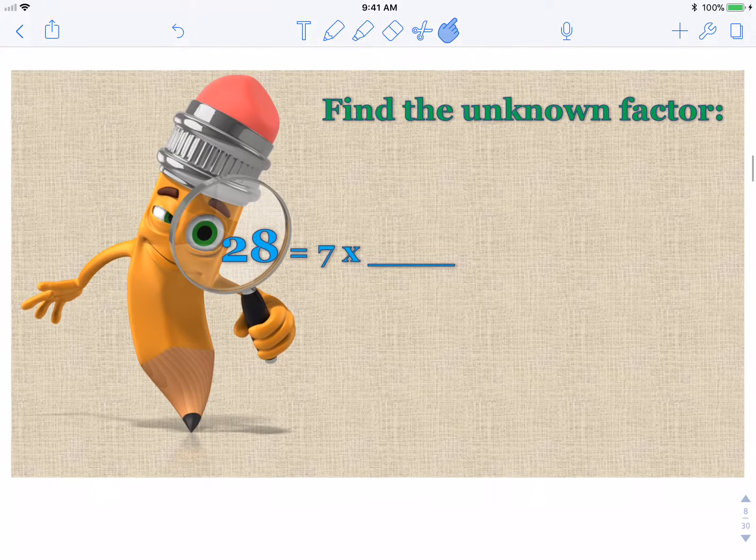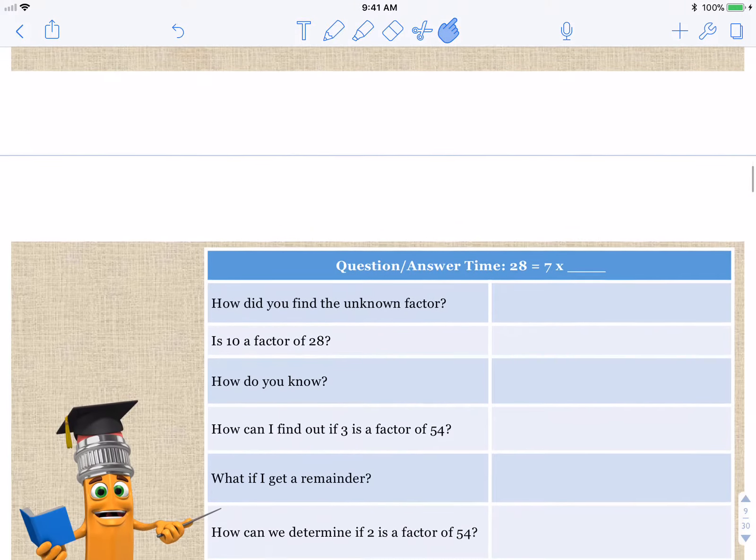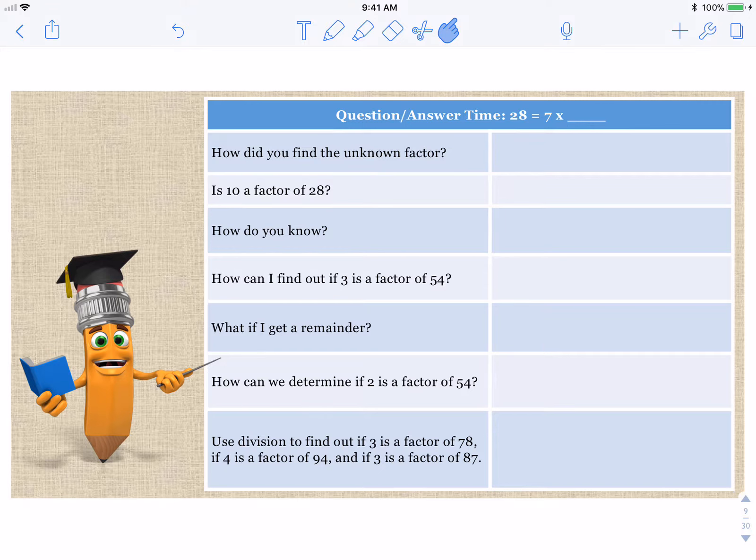Find the unknown factor. Seven times blank equals 28. So when you don't know the factor, you could do the opposite, which would be 28 divided by seven, couldn't you? So go ahead and solve it and see what you get. Question and answer time. 28 equals seven times blank. How did you find the unknown factor? We kind of talked about it in the previous slide. You could divide.